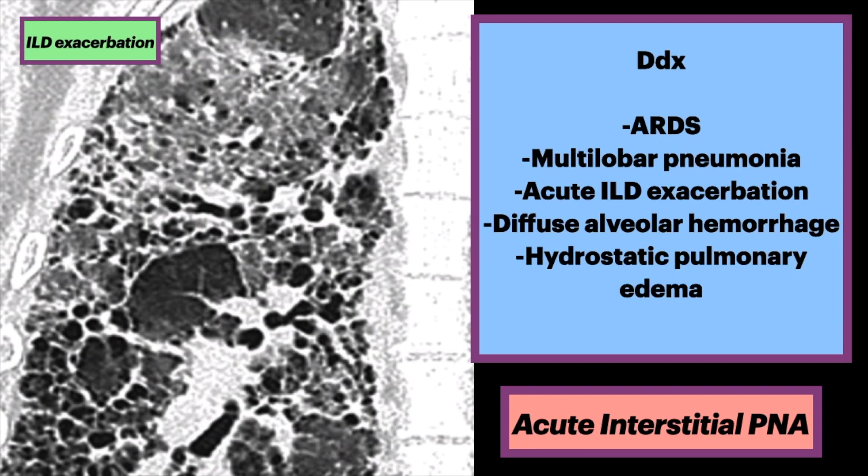In terms of the differential, there are many, including acute respiratory distress syndrome, multilobar pneumonia, acute exacerbation of interstitial lung disease, diffuse alveolar hemorrhage, and hydrostatic pulmonary edema. The case here shows an ILD exacerbation, which can mimic AIP.